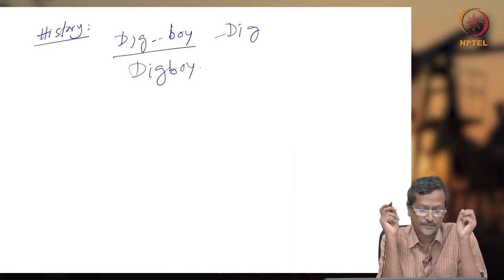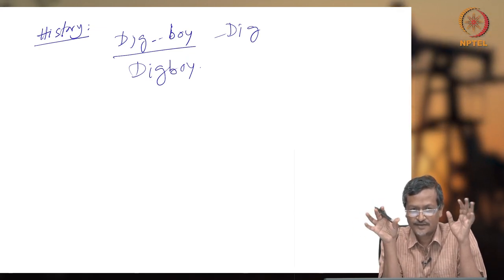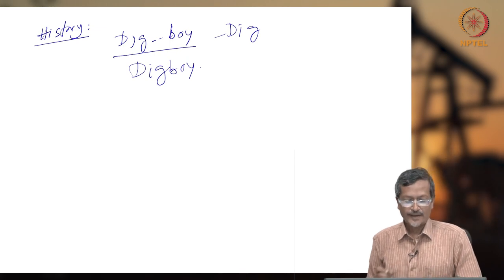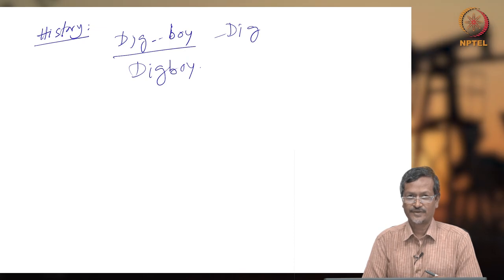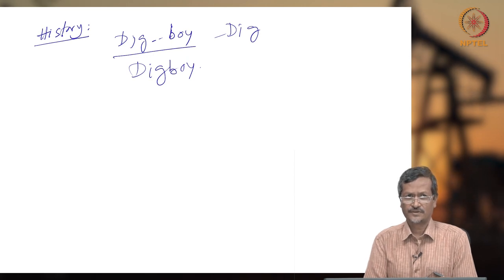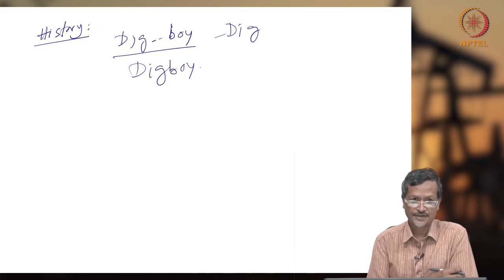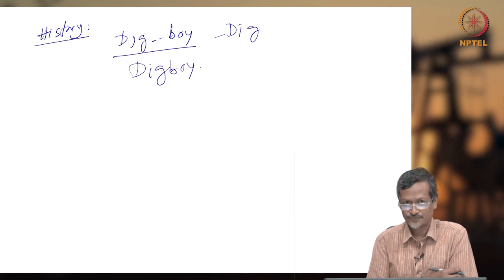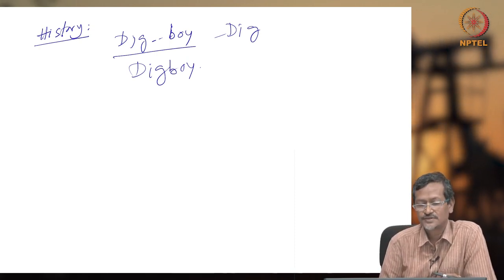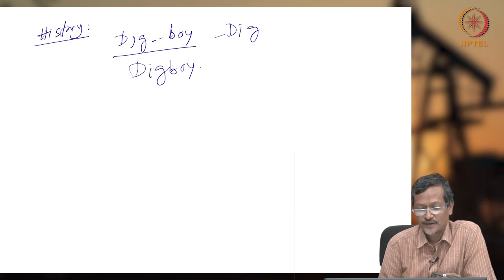The British government started the first well bore — well number one — in the Digboi area. The Indian government has created a museum there to show that first Indian well bore. India also got oil in Mumbai High, which produces about 14 percent of India's energy from oil alone. Other areas include Gujarat, Rajasthan, and Tamil Nadu. Although there are many well bores and activities, India is still not sufficient in oil production and imports more than 80 percent of its oil and gas from outside.